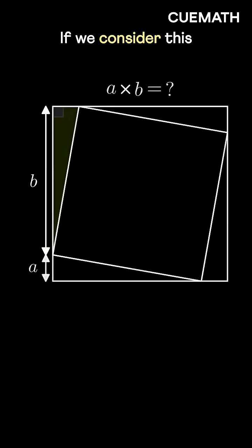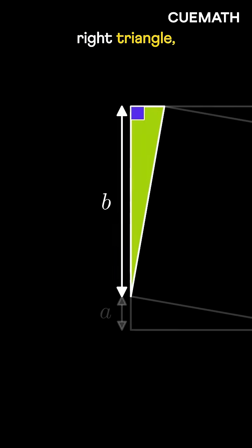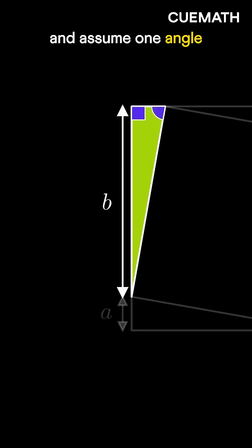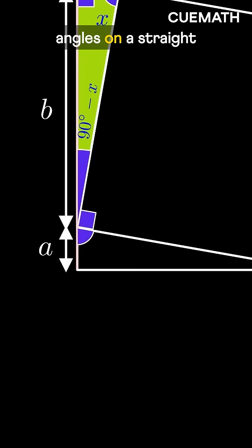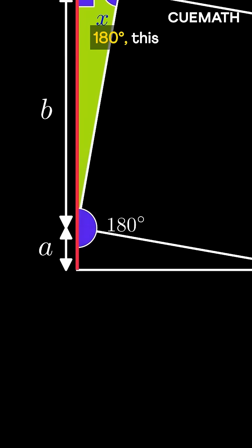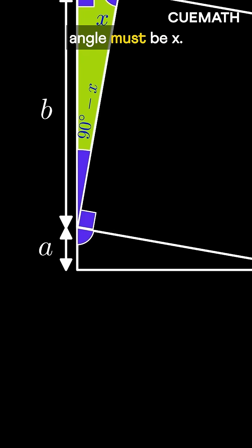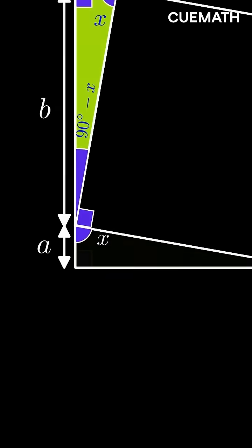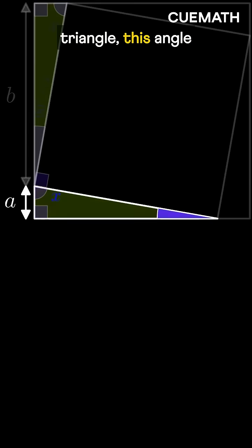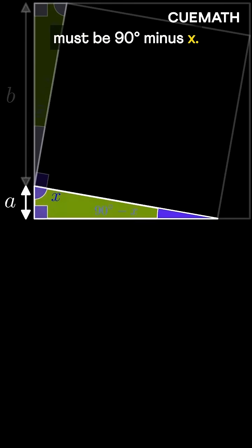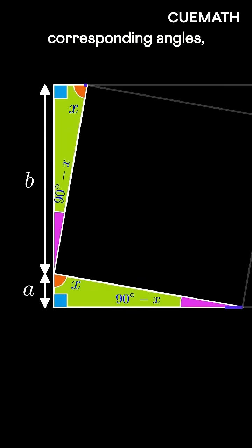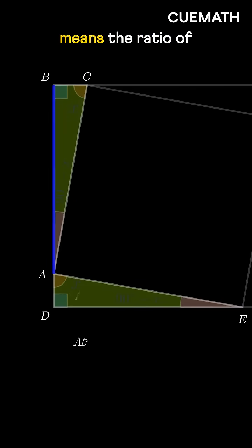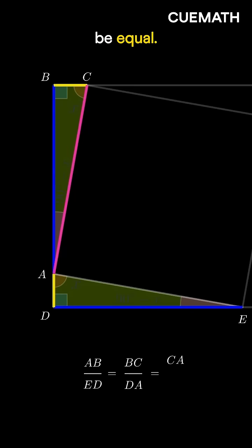Let's think about it. If we consider this right triangle and assume one angle to be X, then the other must be 90 minus X. Since the three angles on a straight line sum to 180 degrees, this angle must be X. In this right triangle, this angle must be 90 minus X. Both of these triangles have equal corresponding angles, so they are similar, which means the ratio of their sides must be equal.